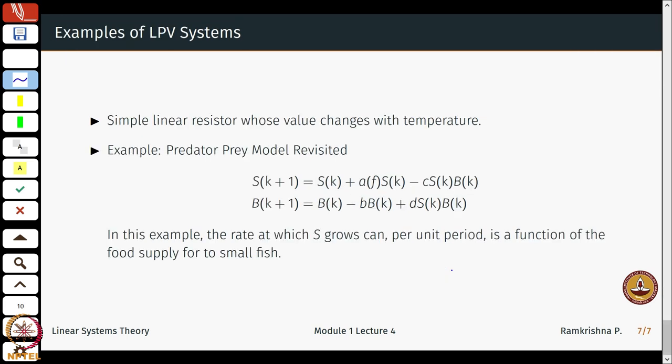A little simple example would be: in most operating regions, V would be a linear relation with R and R would be fairly constant, but if I say R is different depending on temperature, then that is a parameter varying resistance—it is actually depending on the temperature. Let us revisit the predator prey model of what parameter varying could actually mean in some of those cases.